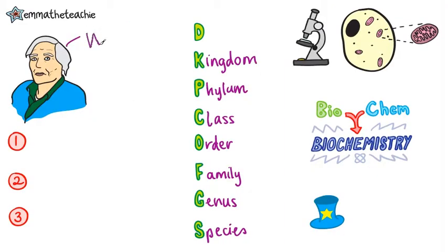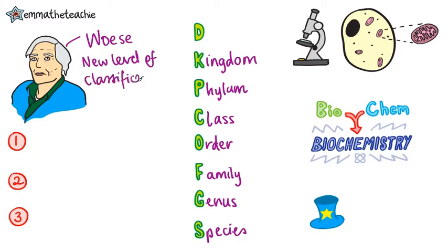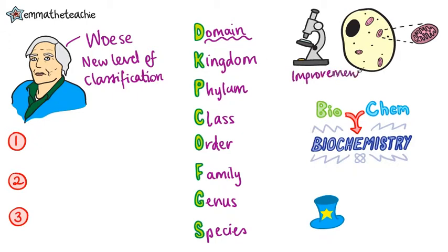There is now a new level of classification, developed by an American scientist called Carl Woese. This new level is called domains, and it is above kingdoms. So we could modify our mnemonic to say: definitely keep ponds clean, or frogs get sick.